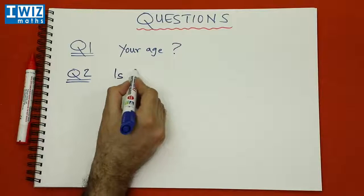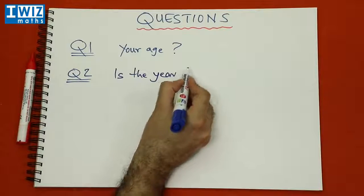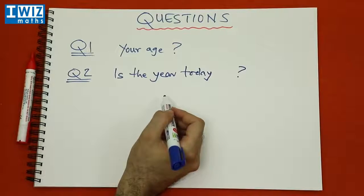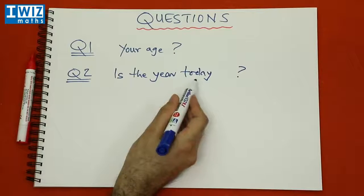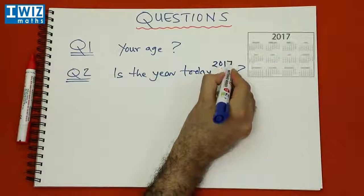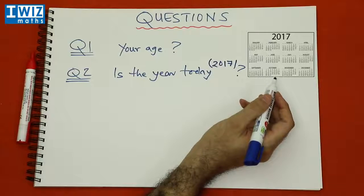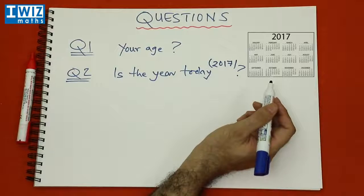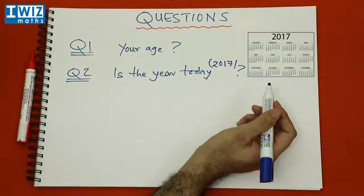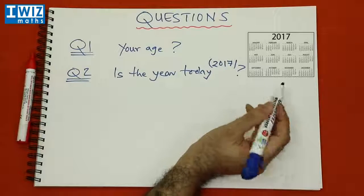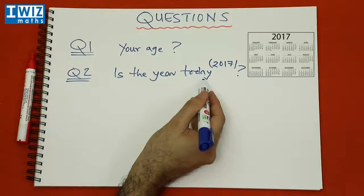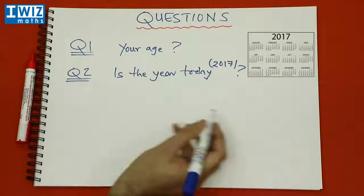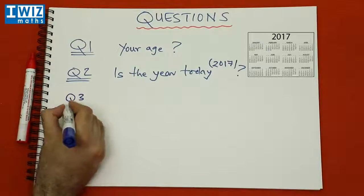Here's another question: is the year today a prime number or not? Today we are in the year 2017, so the question you need to ask is: is 2017 a prime number or not? You could be looking at the same question in the year 2019, 2020, or 2021 — whatever the year today is, work out whether that year is a prime number or not. Question number three is a slightly harder question.